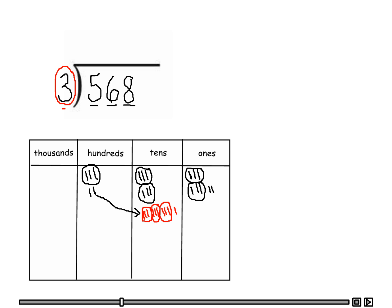Let's do the same thing with the other hundred that is here. We moved it over to the tens place, so we're going to do the same thing with this hundred that's left over and put it in groups of three: one, two, three, four, five, six, seven, eight, nine, ten. Remember, one hundred is ten tens, so that's why we place ten disks over here. This is one group of three, two groups of three, and three groups of three. We can go ahead and scratch this out because we moved it to the tens place. This leaves us with one group of three — so this is one.